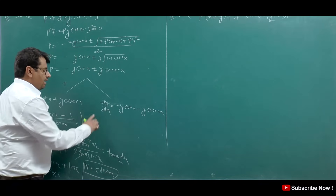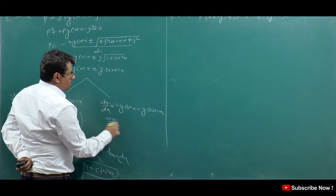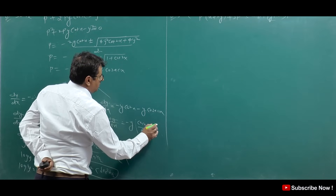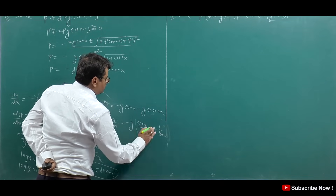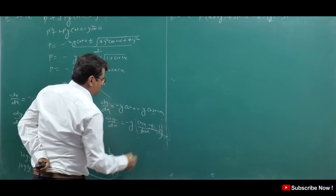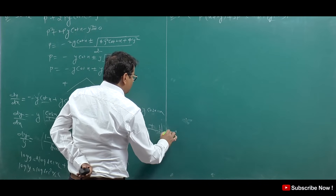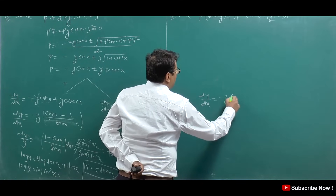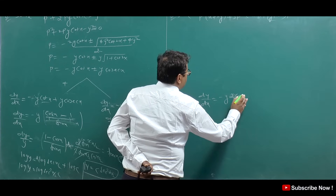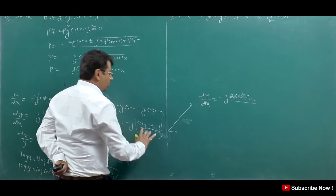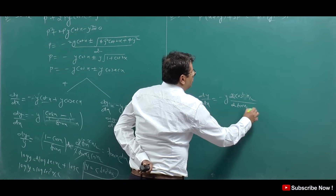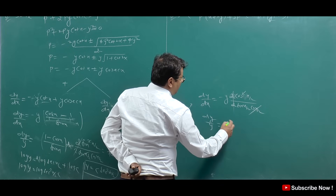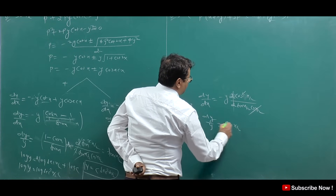For Case 2: dy/dx = y(cot x + cosec x). Separating: dy/y = (cos x + 1)/sin x · dx. Now (1 + cos x) = 2cos²(x/2) and sin x = 2sin(x/2)cos(x/2), so the expression simplifies to cot(x/2). Thus dy/y = cot(x/2) dx.